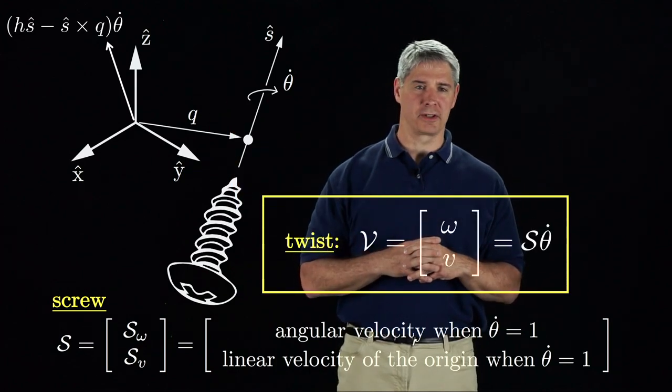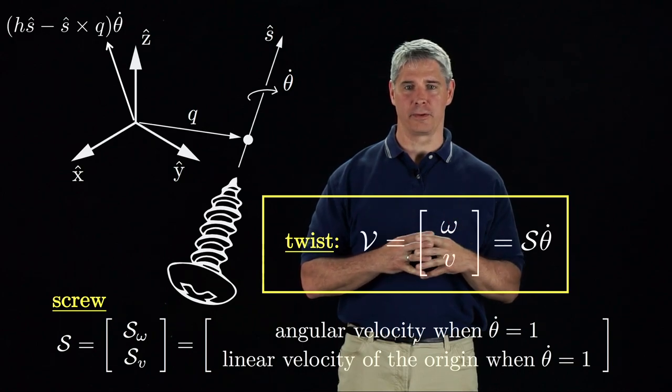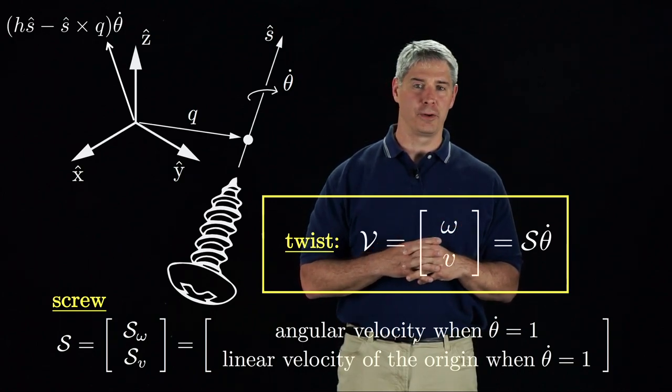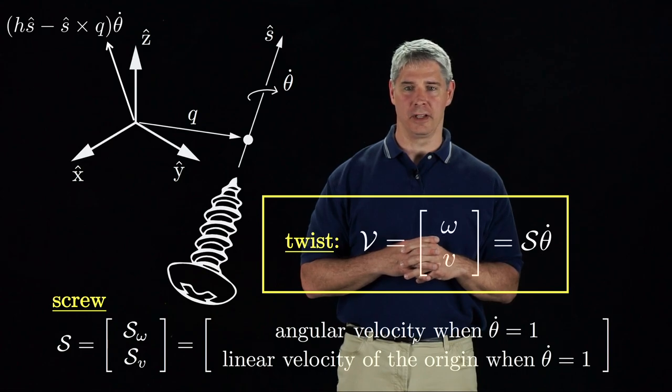Multiplying our representation of the screw axis S by the scalar rate of rotation theta dot, we get the twist of full representation of angular and linear velocity.